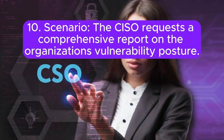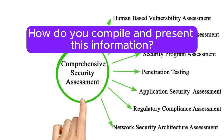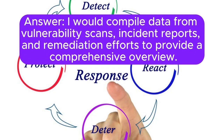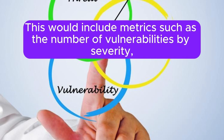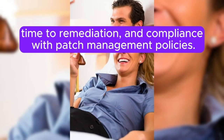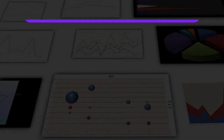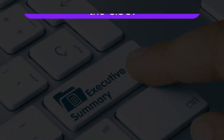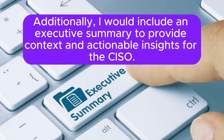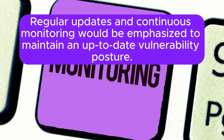Scenario 10: The CISO requests a comprehensive report on the organization's vulnerability posture. How do you compile and present this information? I would compile data from vulnerability scans, incident reports, and remediation efforts to provide a comprehensive overview. This would include metrics such as the number of vulnerabilities by severity, time to remediation, and compliance with patch management policies. I would use visual aids like charts and graphs to highlight key trends and areas of concern. Additionally, I would include an executive summary to provide context and actionable insights for the CISO. Regular updates and continuous monitoring would be emphasized to maintain an up-to-date vulnerability posture.